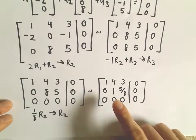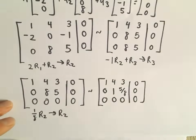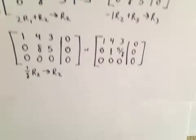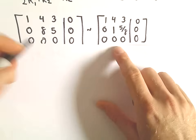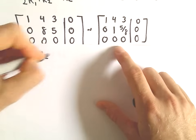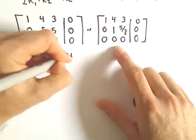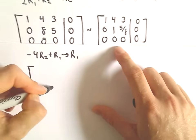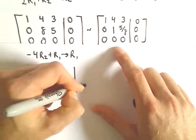And the last thing I want to do is get a 0 in the first row, second column. So to do that, I'm going to multiply the second row by negative 4, and add that to the first row to get my new first row. So we have 0, 0, 0 on the bottom.